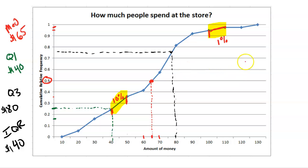You could also have a line that's flat. A flat line, like from $110 to $120, means there was no change — 96% at $110 and 96% at $120 would be a 0% change. That means 0% of people spent between $110 and $120. You're never going to have a line that goes down because you can't have a negative percent of data — it's impossible.